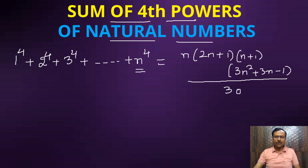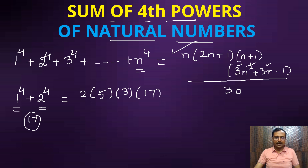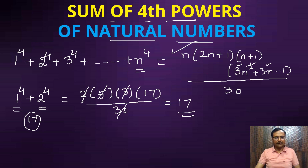Let's verify with a simple example: 1⁴ + 2⁴ = 1 + 16 = 17, so the answer must be 17. Putting n = 2: the second factor 2n+1 = 5, third factor n+1 = 3, and the fourth factor is 3(4) + 3(2) − 1 = 12 + 6 − 1 = 17. Denominator is 30. So 2 × 5 × 3 × 17 / 30: the 5 × 3 × 2 = 30 cancels with 30, leaving 17. The formula exactly fits.